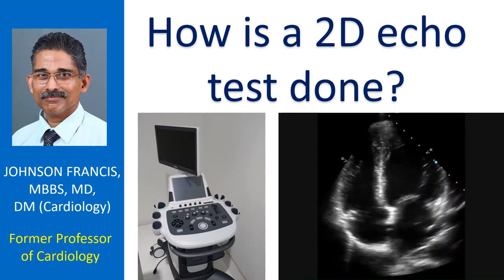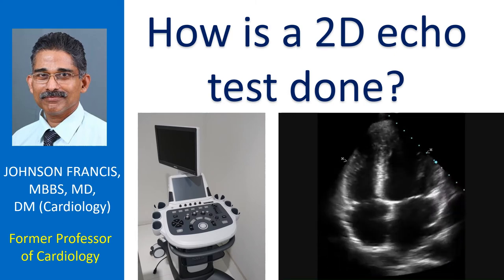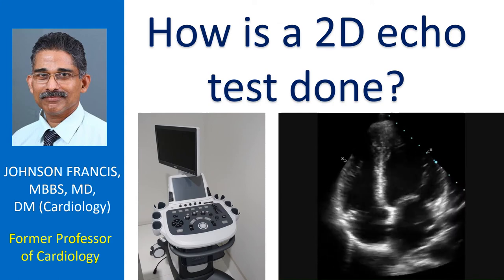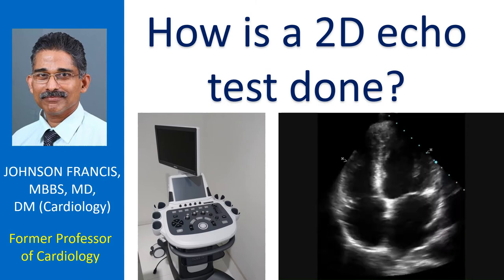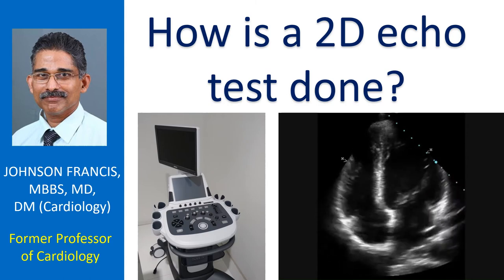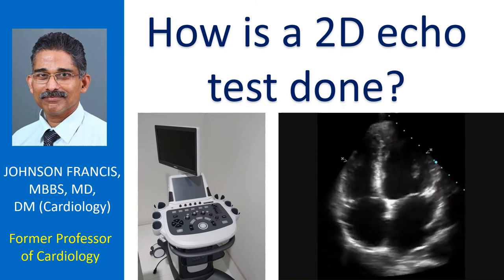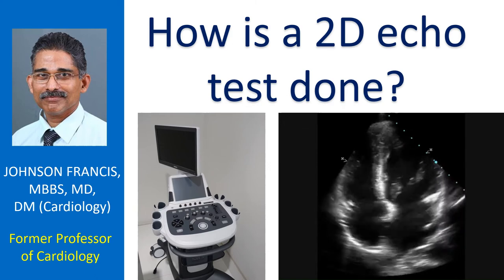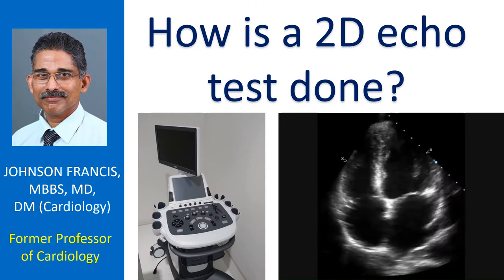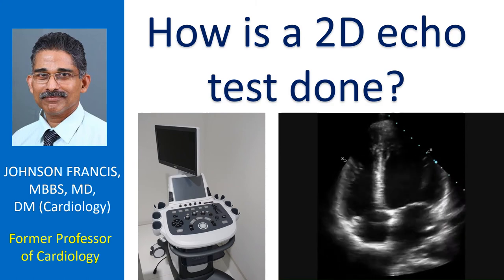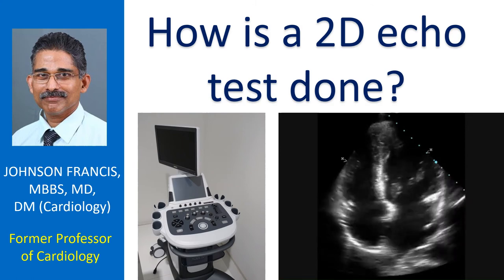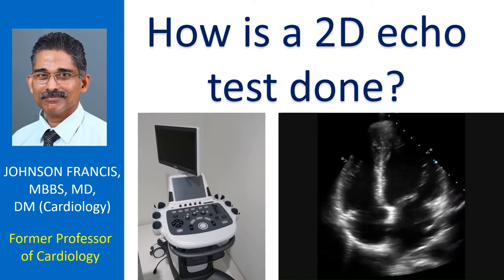2D echo is a 2-dimensional representation of echoes received from the structures of the heart. When it is done as a live session, it is called real-time 2D echo. A further advancement is 3-dimensional reconstruction, known as 3D echo. Initially, it was still 3D reconstructions obtained by post-processing. Later, when real-time 3D became available, some called it 4D imaging as well.